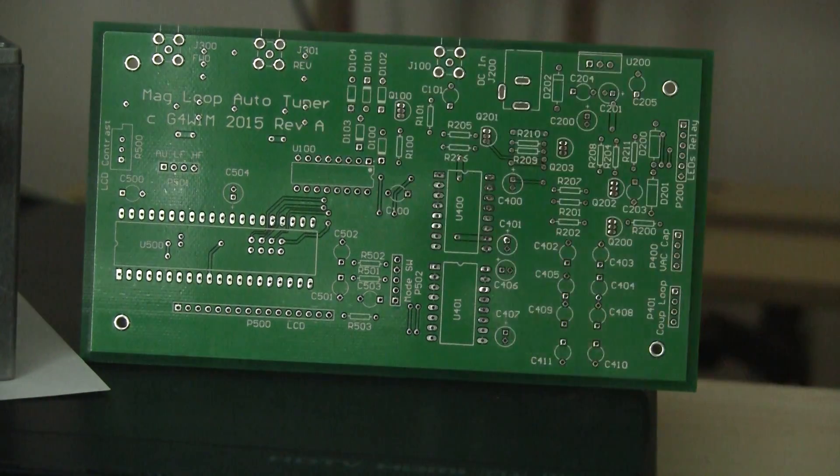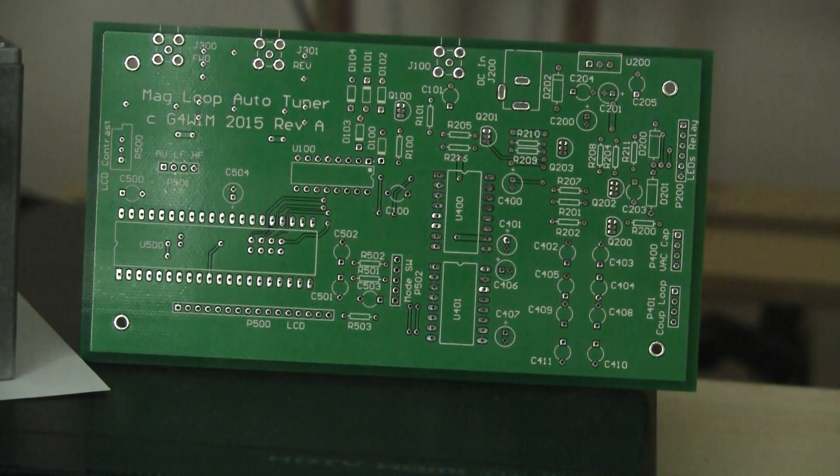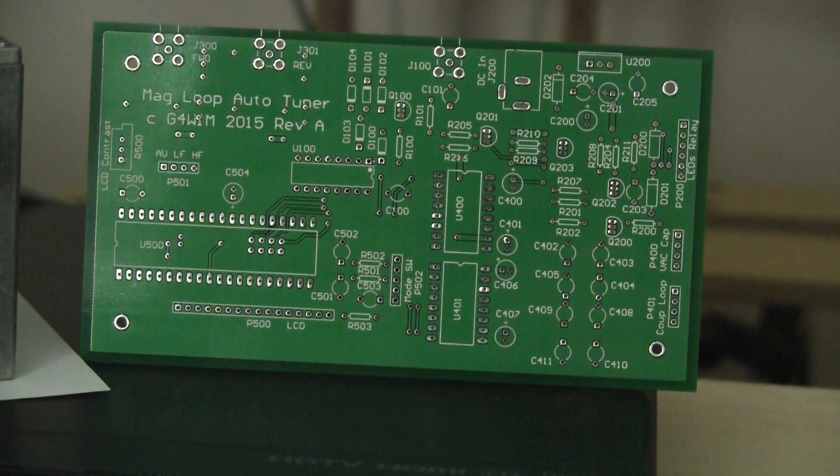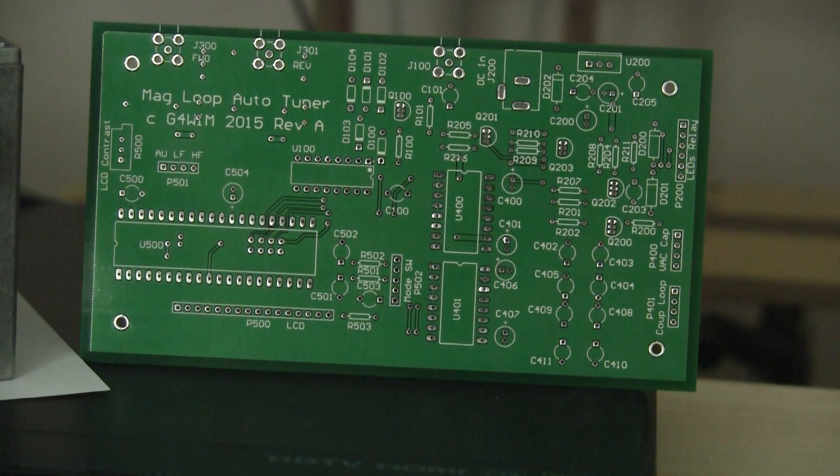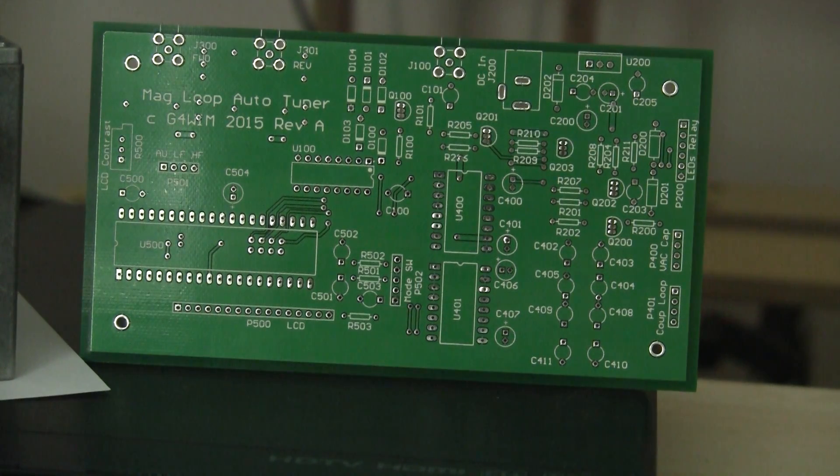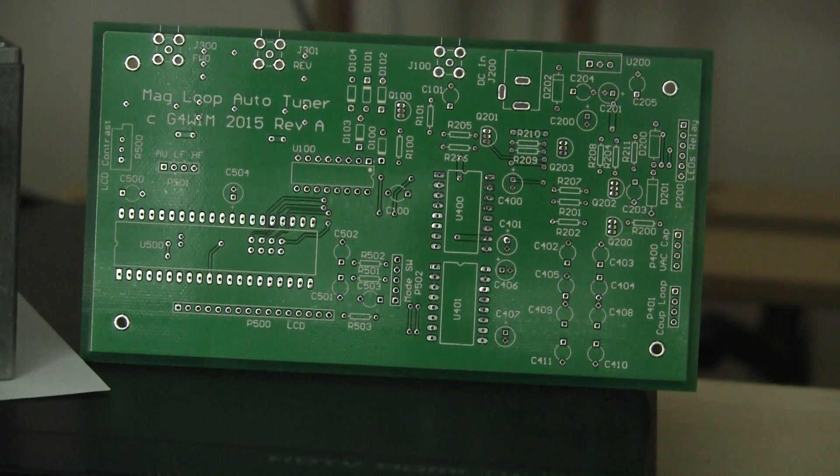This is actually a Rev A circuit board. There were a couple of minor flaws on it which have been fixed. So the boards will actually be Rev B when they come out, ready to go. And as for the firmware customization, very easy to do yourself if you've got access to a PC and the tools. But I may offer a service whereby I actually generate the firmware for a given set of data.